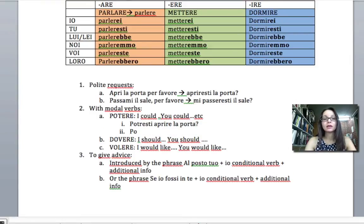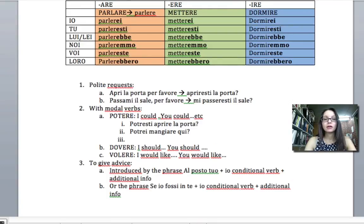You could say something like asking permission in a polite way: Potrei mangiare qui, could I eat here? It could also be advice: Potresti fare attivita fisica, you could do physical activity. So it really just translates to the English I could, you could, he could, she could, etc.